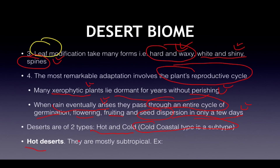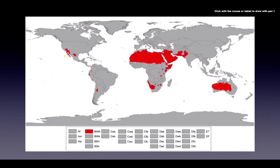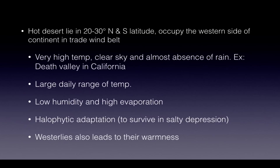Deserts are of two types: hot and cold — with cool coastal as a subtype. Hot deserts are mostly subtropical: examples include the Sahara in North Africa, Arabian desert in the Middle East, and Kalahari in southern Africa (Angola, Botswana, Namibia). The Kavir is a great salt desert and the Dasht-e Lut means 'emptiness' — both are in Iran. Kalahari is in southern Africa. Australia has four contiguous deserts. Sonoran and Mojave are in the USA; Thar desert is in India-Pakistan.